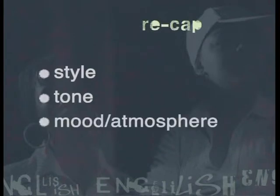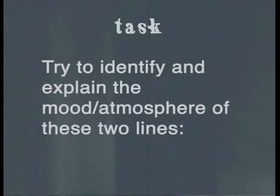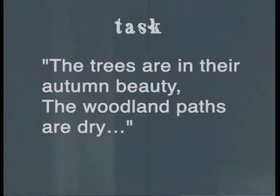Our understanding of the atmosphere of a text relies on the feelings we get when we read it. Let's recap what we've looked at today: we've examined the style, tone and mood or atmosphere of certain poems. It is important to be able to recognise these things when analysing a poem. Try this activity to practise your skills: identify and explain the mood or atmosphere of these two lines — 'The trees are in their autumn beauty, the woodland paths are dry.'